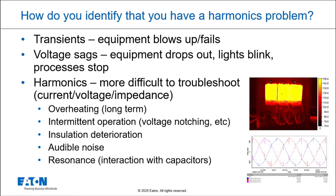Voltage sags are a very common problem. If your equipment is dropping out, it's likely a voltage sag, an interruption, or a recloser event. But that doesn't necessarily mean you don't also have something related to harmonics, because there can be misoperation of equipment with some pieces around harmonic voltage distortion. Identifying the symptoms is super important.